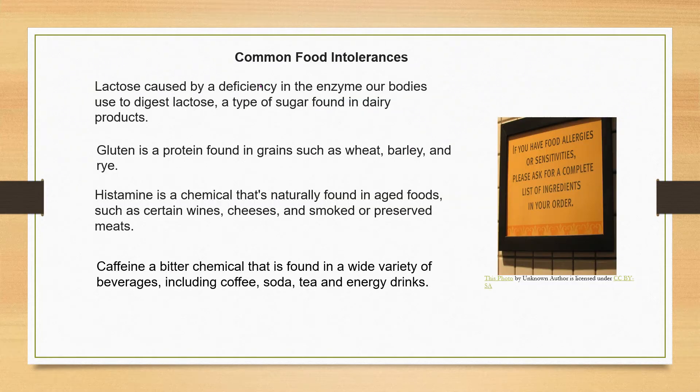These are the four most common food intolerances. Lactose is a type of sugar found in dairy products. Gluten is a protein found in some grains. Histamine is a naturally occurring chemical found in aged foods, such as some wines and cheeses and smoked or preserved meats. And then caffeine.